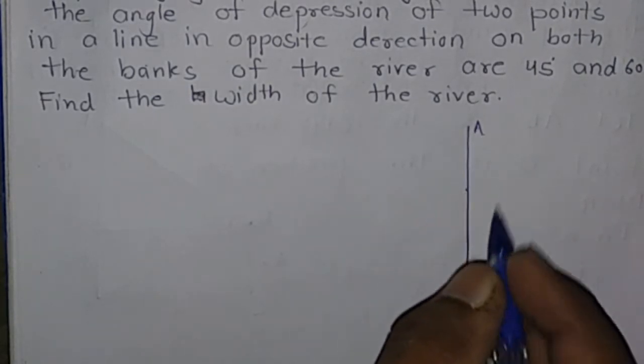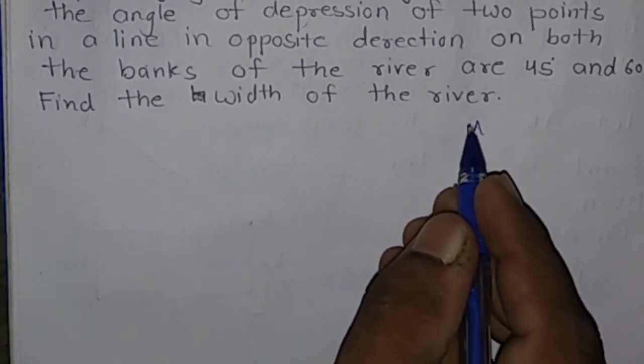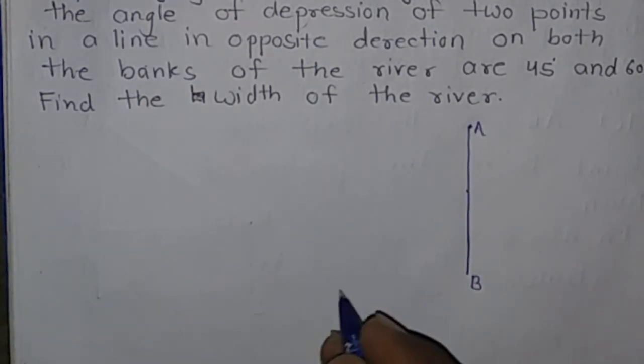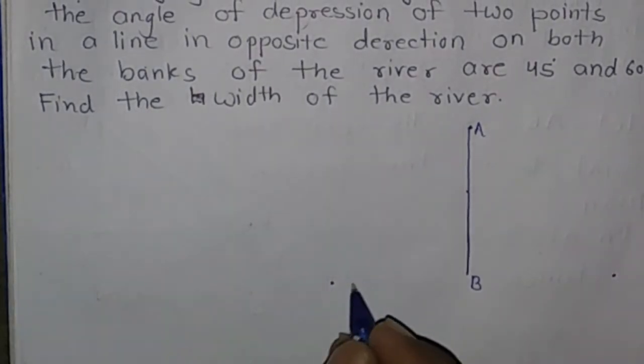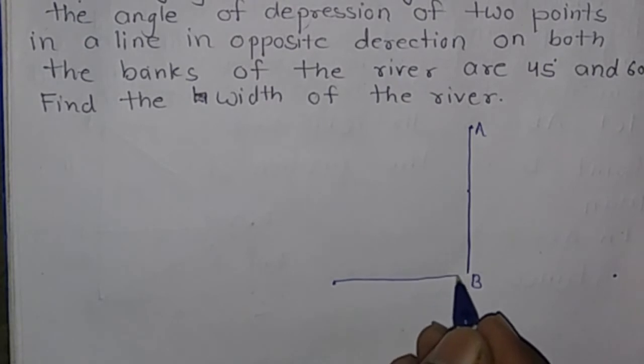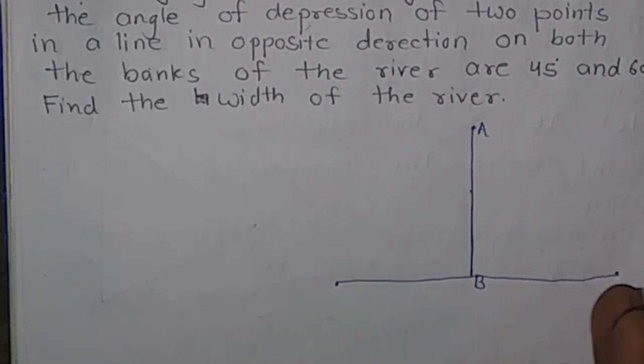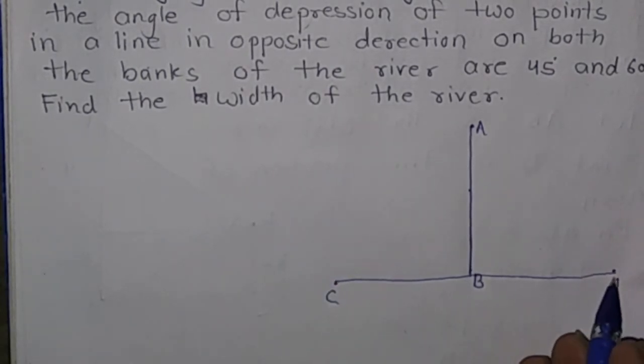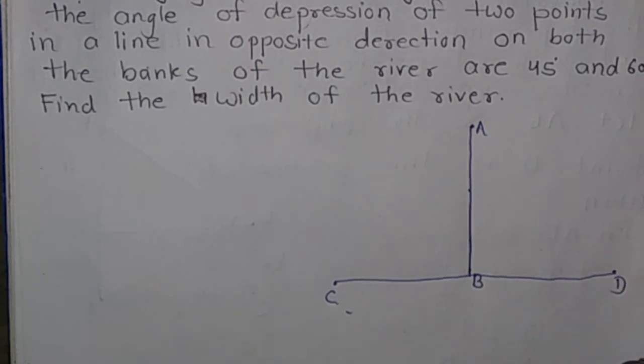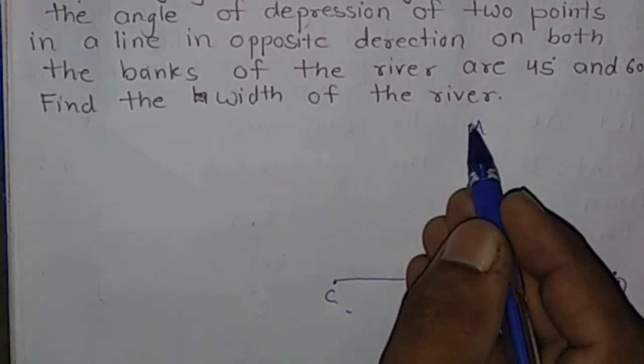Let h be the height of the aeroplane and A is the position of the aeroplane. C and D are two banks of the river. We need to find the width of the river, which is CD.